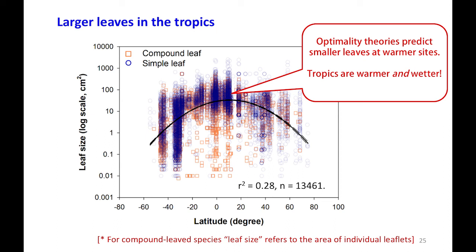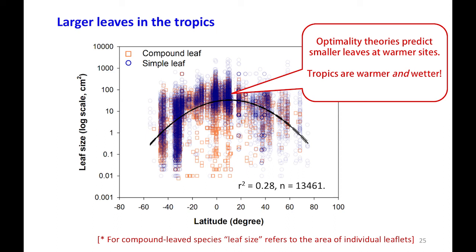Here's a scatter plot showing leaf size in relation to latitude across the world. It's absolutely true — there are larger leaves in the tropics, though with a lot of variation at any given latitude. But going back to optimality theory, the tropics are both warmer and wetter. So I'd expect larger leaves in wetter places, but the prediction is for smaller leaves at hotter places. There's clearly an interaction between site temperature and moisture that needs to be considered — and strangely, that hadn't really been addressed in the literature until now. Here's a three-way graph: leaf size on the vertical axis versus mean temperature of the warmest month and mean annual precipitation — showing globally, this is a twisted plane.